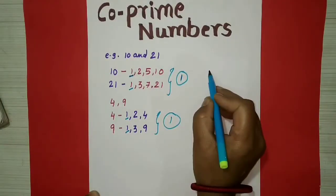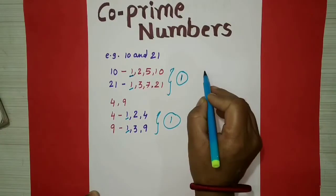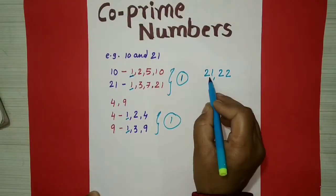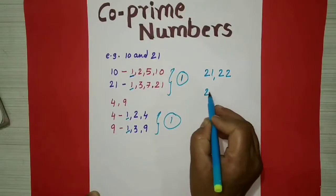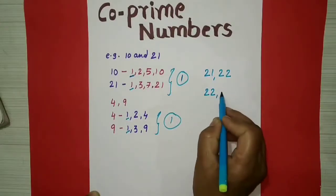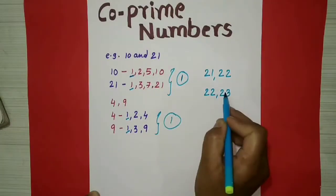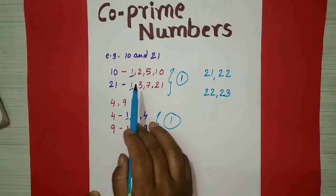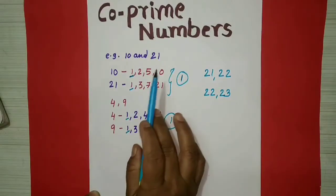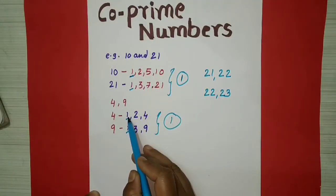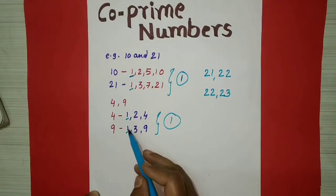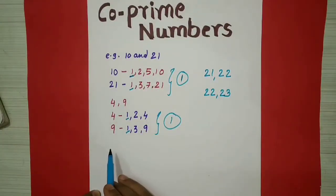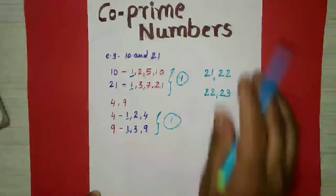Again, one more example: 21 and 22 are also co-prime numbers, and 22 and 23 are also co-prime numbers. So co-prime numbers means two numbers which have only 1 as the common factor or common divisor are said to be co-prime numbers.